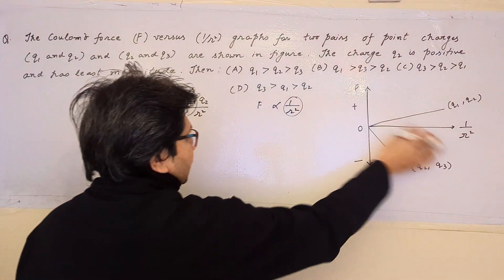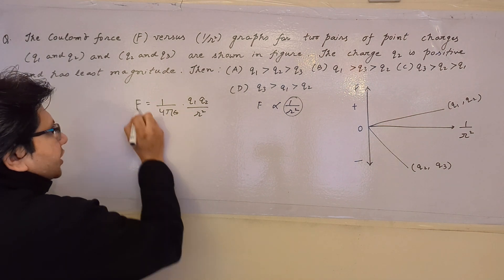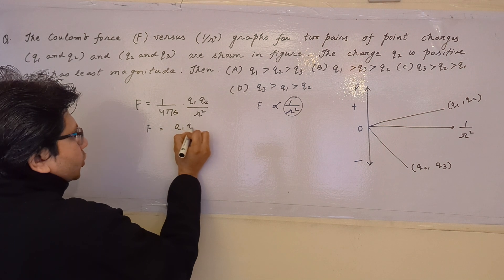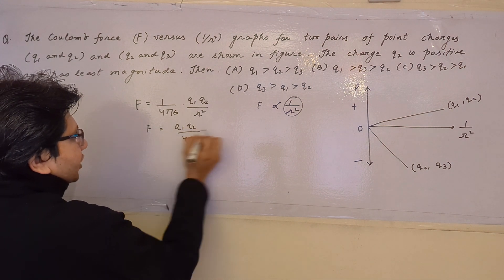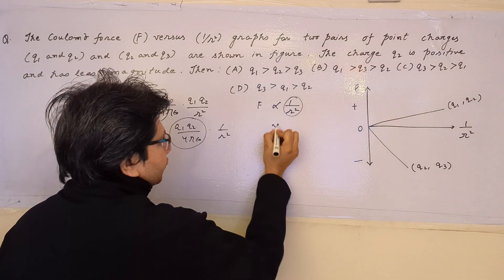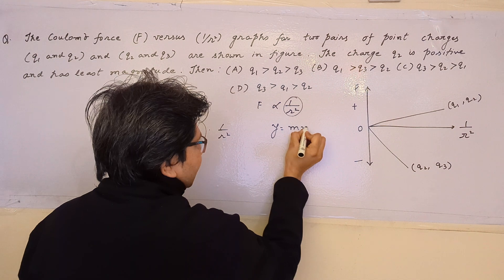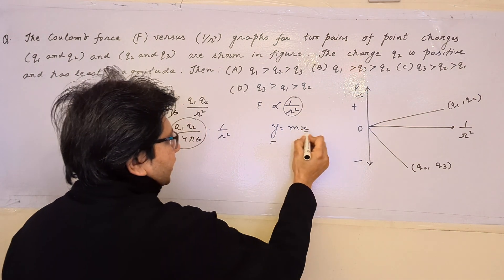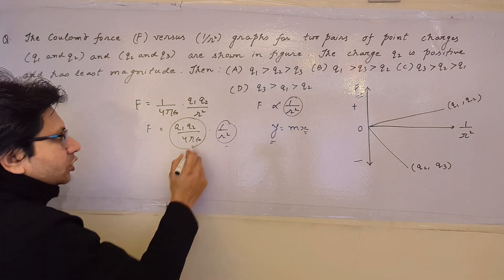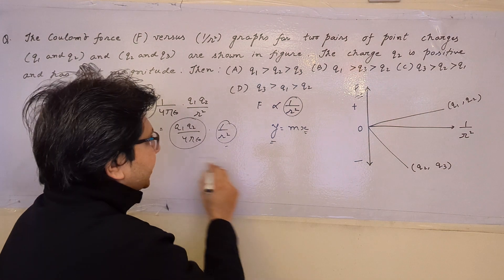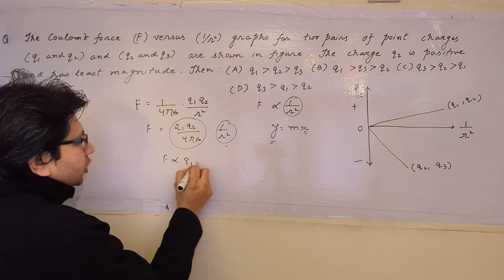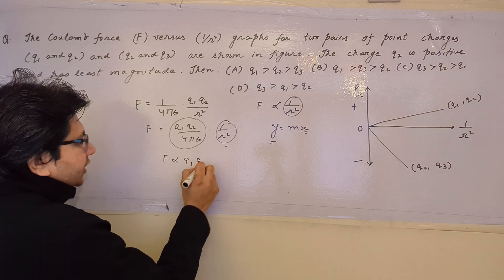When plotting F versus 1/r², the remaining term q1q2/(4πε₀) acts as the slope. Comparing with the equation of a straight line through the origin, y = mx, here y is F and x is 1/r². So the slope is q1q2/(4πε₀), where 4πε₀ is a constant equal to 9×10⁹. Therefore, F is directly proportional to the product of the two charges.